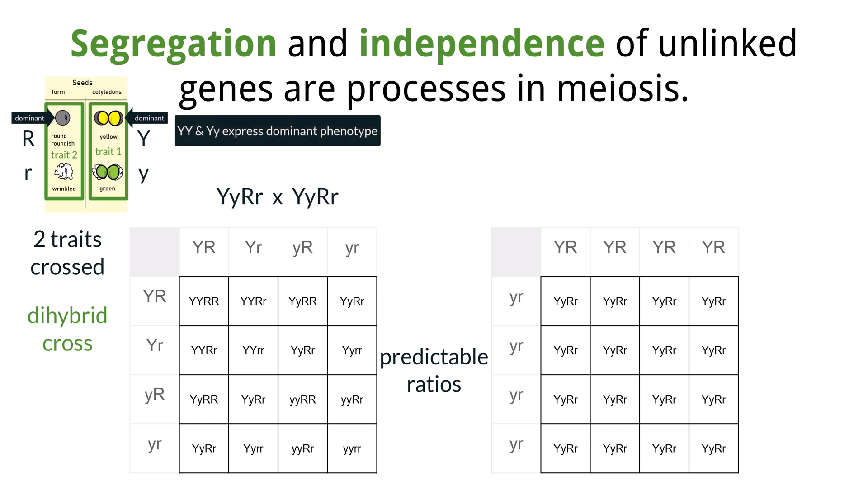Remember that both the homozygous dominant (uppercase Y, uppercase Y) and the heterozygote (uppercase Y, lowercase y) show the dominant trait. While the only way to see the recessive trait is to have two recessive alleles (lowercase y, lowercase y).